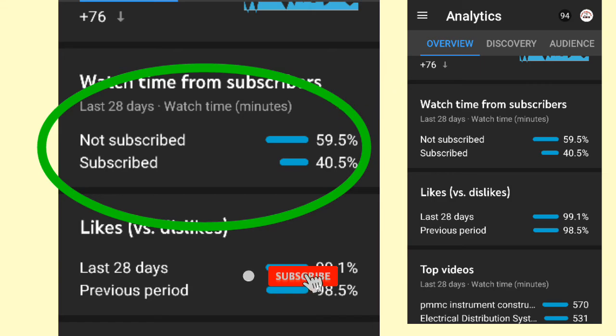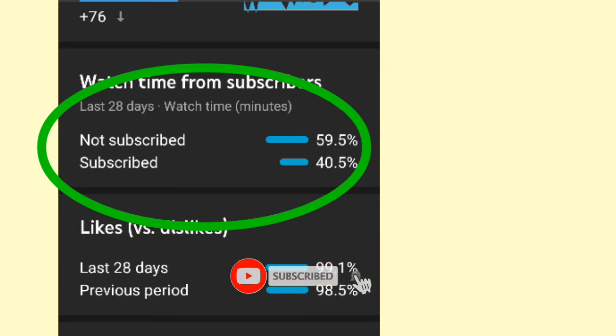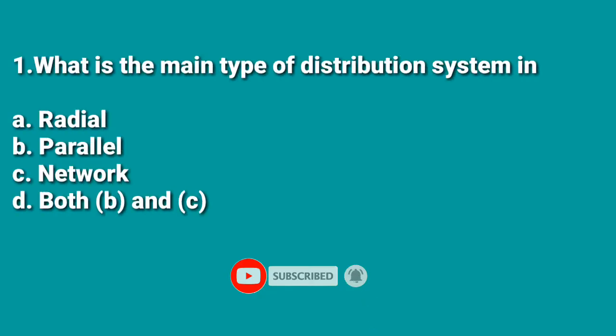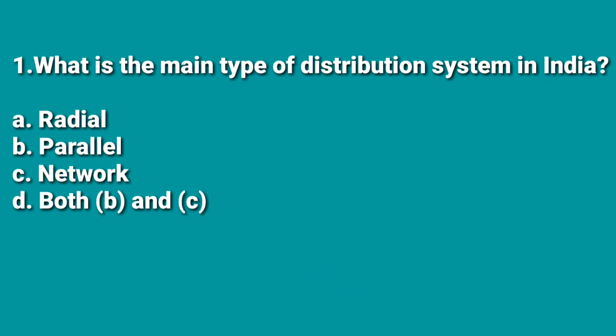The first question is: what is the main type of distribution system in India? A: radial, B: parallel network, C: both B and C. The radial type of distribution system is mostly preferred in India, so the answer is radial.